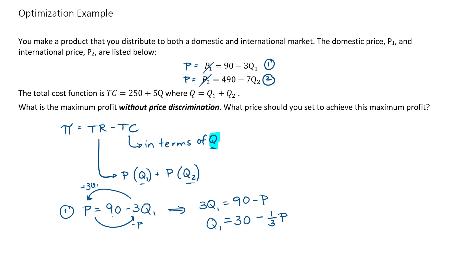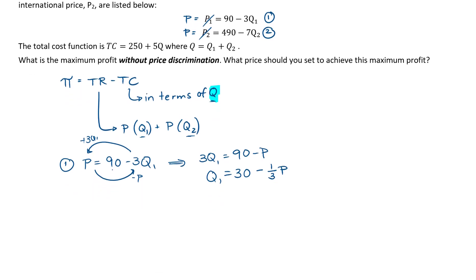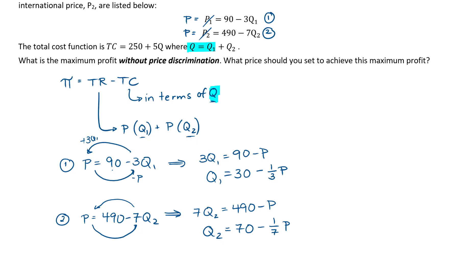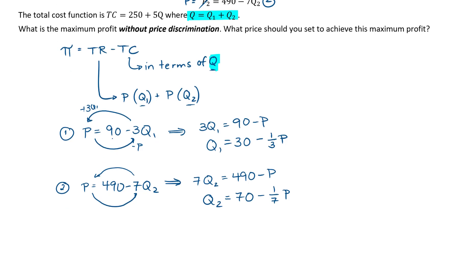Now I have Q1 in terms of P, and I'm going to do the same thing with equation 2. P is equal to 490 minus 7Q2. I want to manipulate this so I have Q2 isolated. Moving 7Q2 to one side and P to the other gives 7Q2 is equal to 490 minus P. Dividing both sides by 7, I get Q2 is equal to 70 minus P over 7. Now I'm going to use a third equation: Q equals Q1 plus Q2, to combine these.